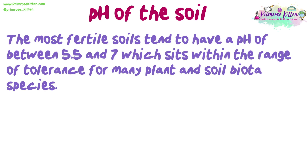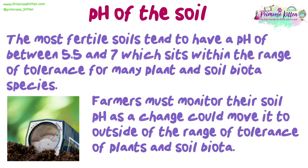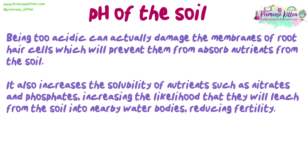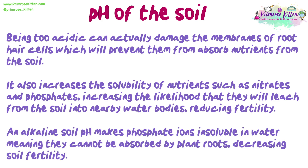pH of the soil: the most fertile soils tend to have a pH of between 5.5 and 7, which sits within the range of tolerance for many plant and soil biota species. Farmers must monitor their soil pH as a change could move outside the range of tolerance of plant and soil biota. Being too acidic can actually damage the membranes of root hair cells, which will prevent them from absorbing nutrients from the soil. It also increases the solubility of nutrients such as nitrates and phosphates, increasing the likelihood that they will leach from the soil into nearby water bodies, reducing fertility. An alkaline soil pH makes phosphate ions insoluble in water, meaning they cannot be absorbed by plant roots, decreasing soil fertility.